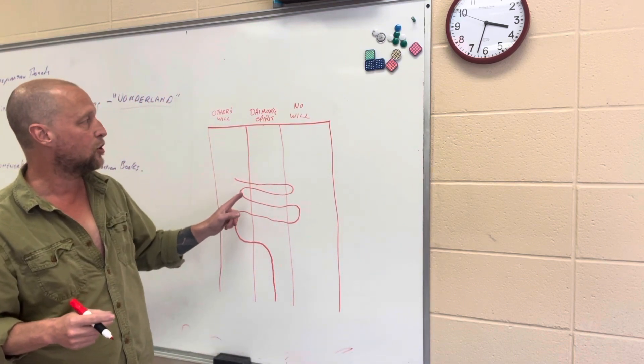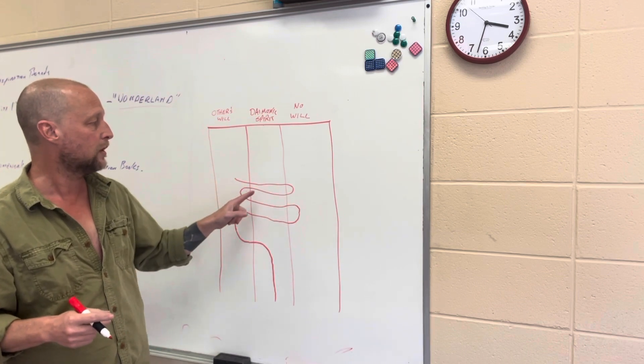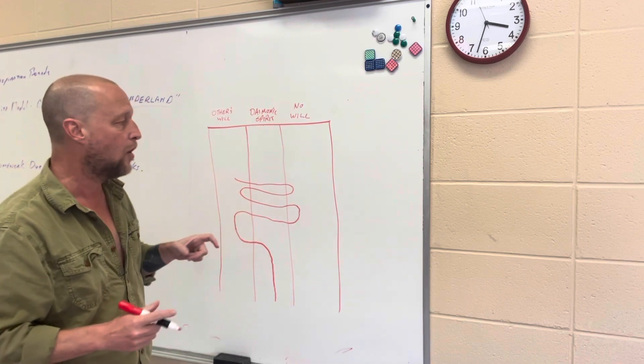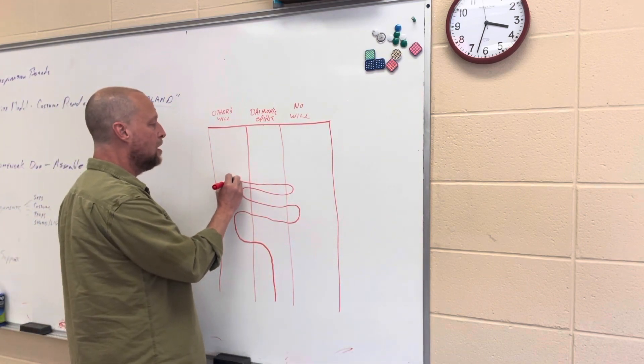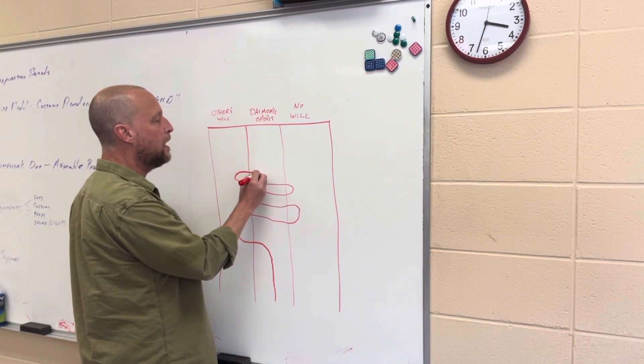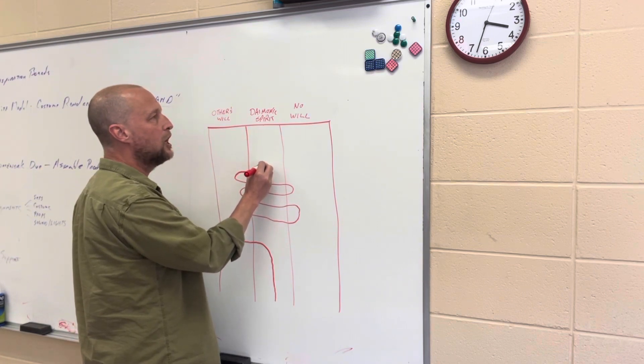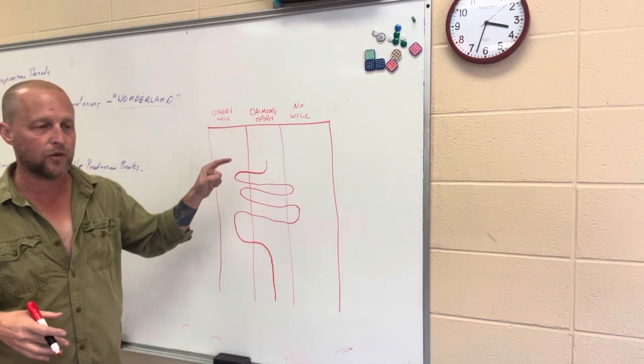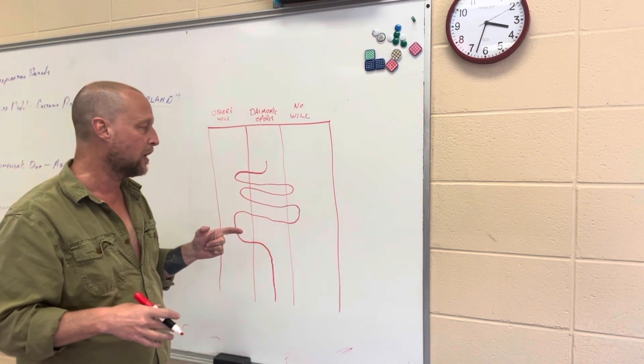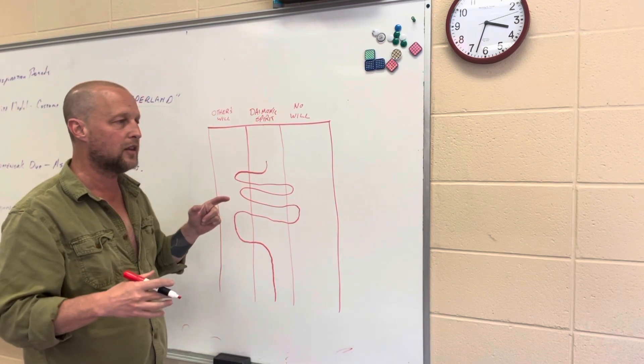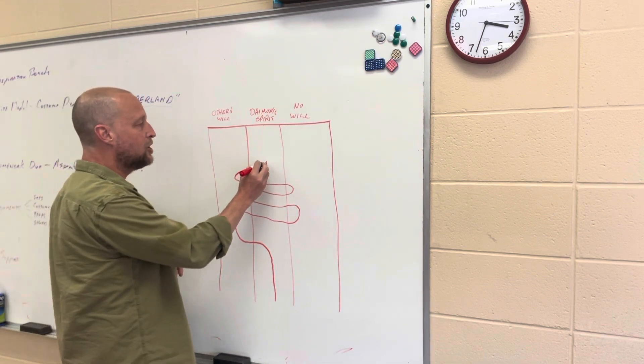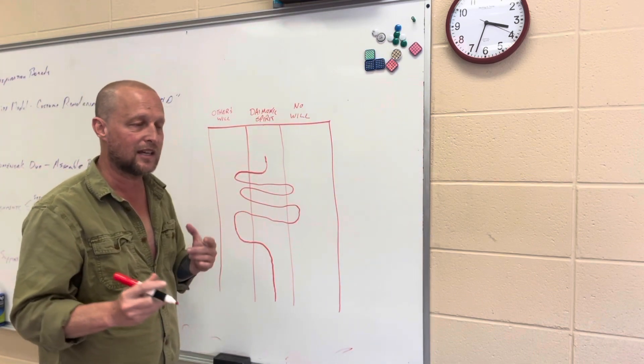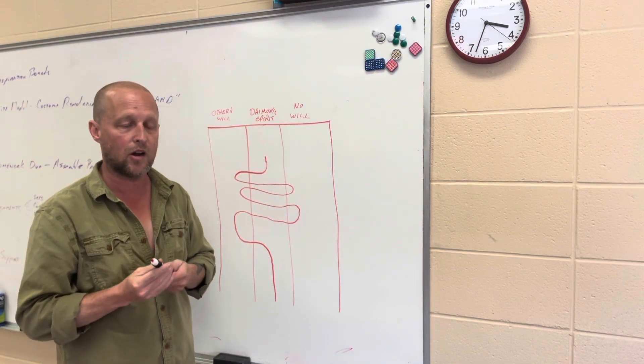And you see, as you self-correct between no will and others' will, you spend a little time in that daemonic spirit. And so hopefully what ends up happening is when you're not being pulled in the direction, you become aware of the thing that you're here to do and what you're meant to do and what you love to do. And that's kind of being under the influence of that daemonic spirit. And so the goal in life, to my mind, is to spend as much time in this middle column as possible.